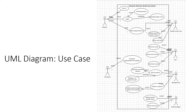Here we have my UML use case diagram with the system — the Enterprise Electronic Health Information System — and then the users on the outside. Each user has their base use case connecting to them with a solid line, and then arrows to represent different interactions with the use cases in the system itself. I'm going to go ahead and focus onto a specific section of the system to give you a better idea of what I'm trying to capture with this use case.